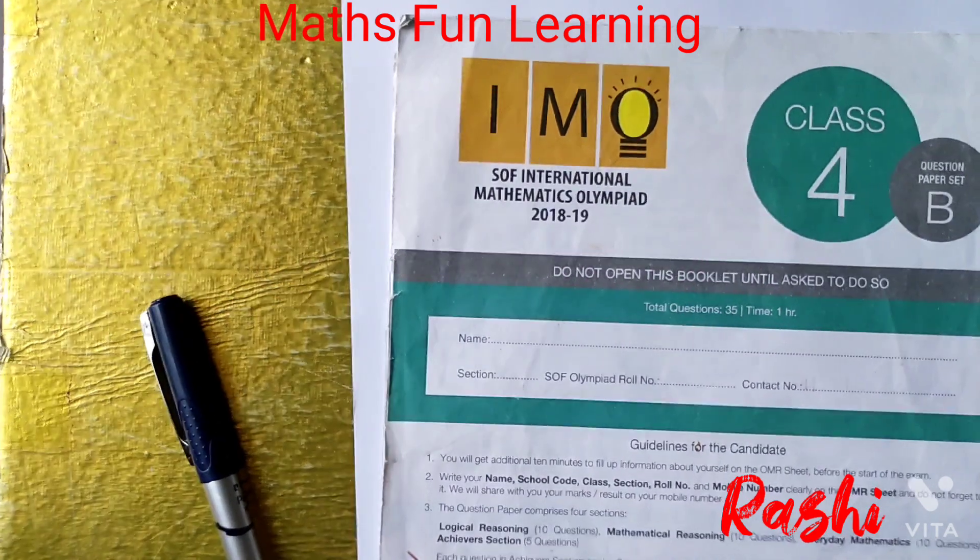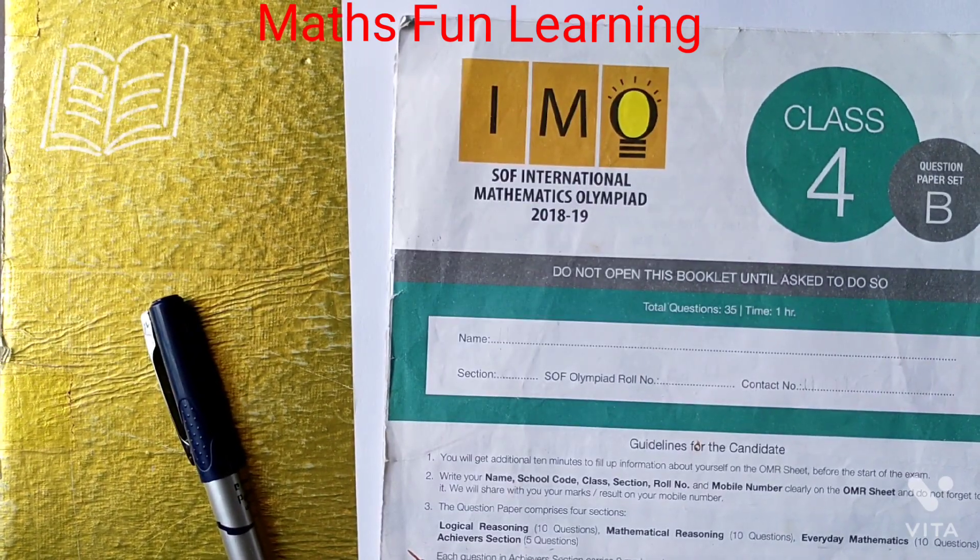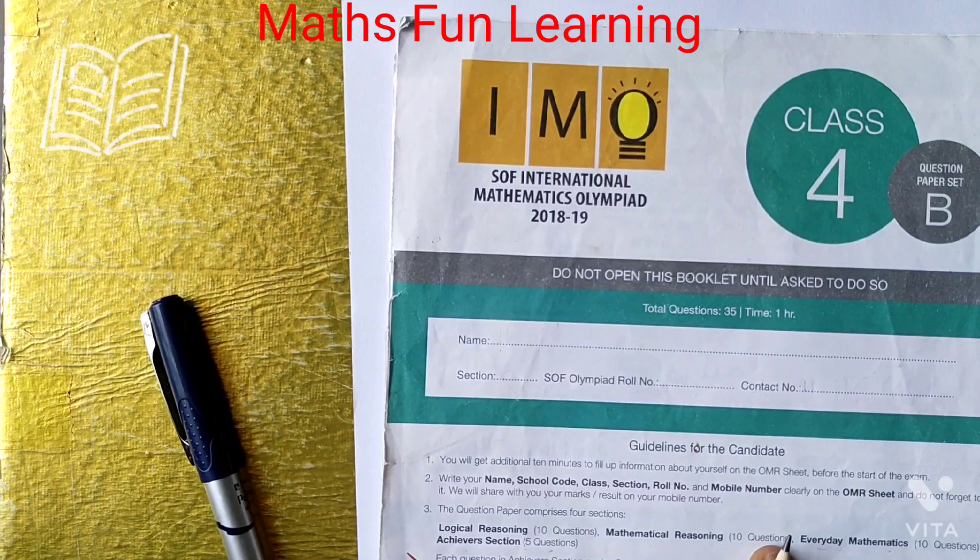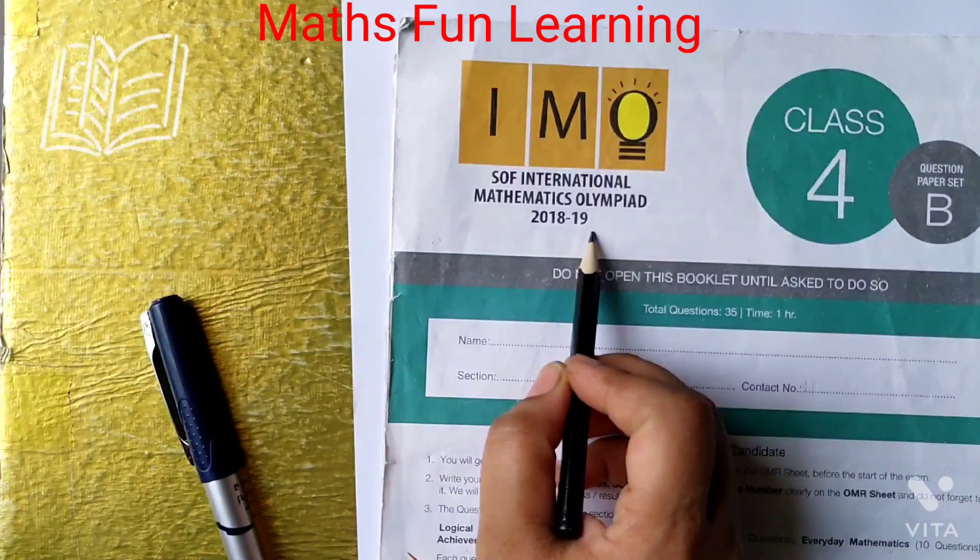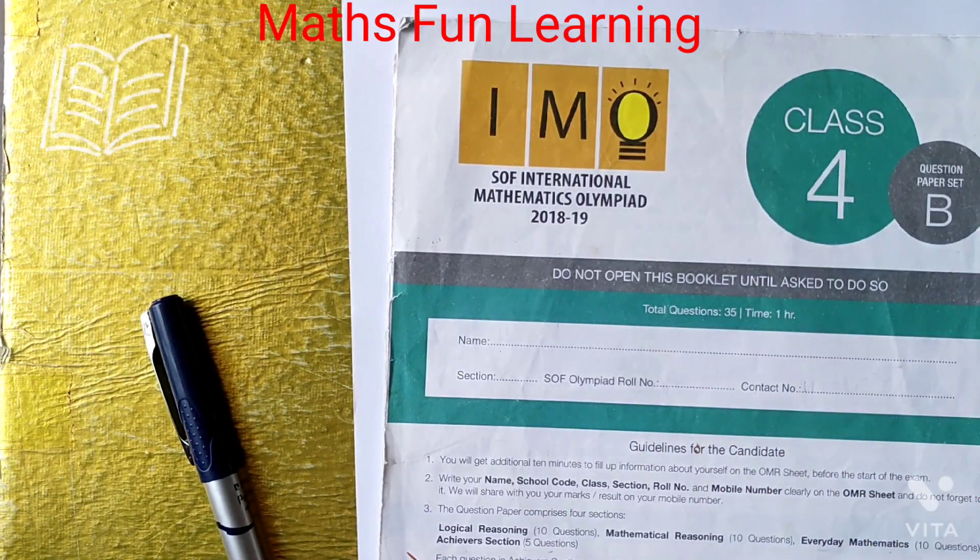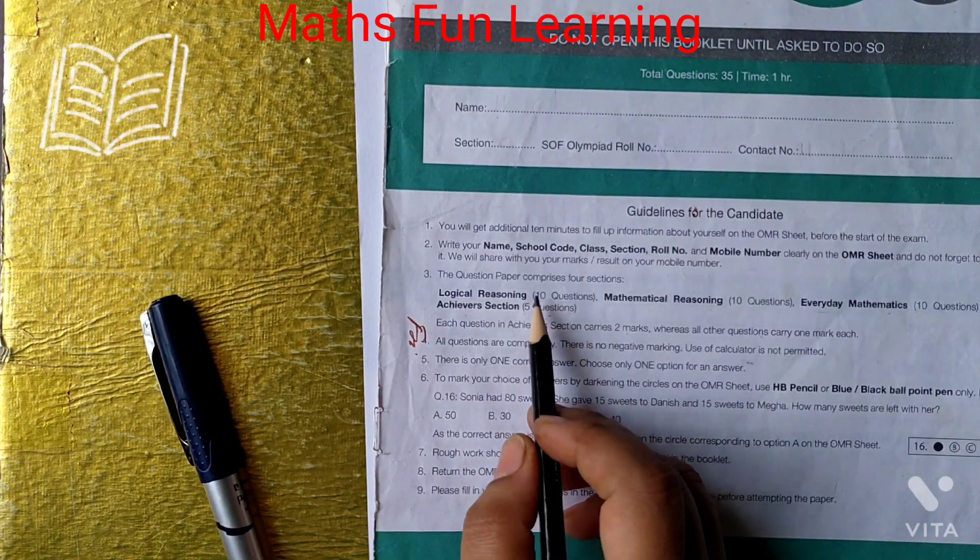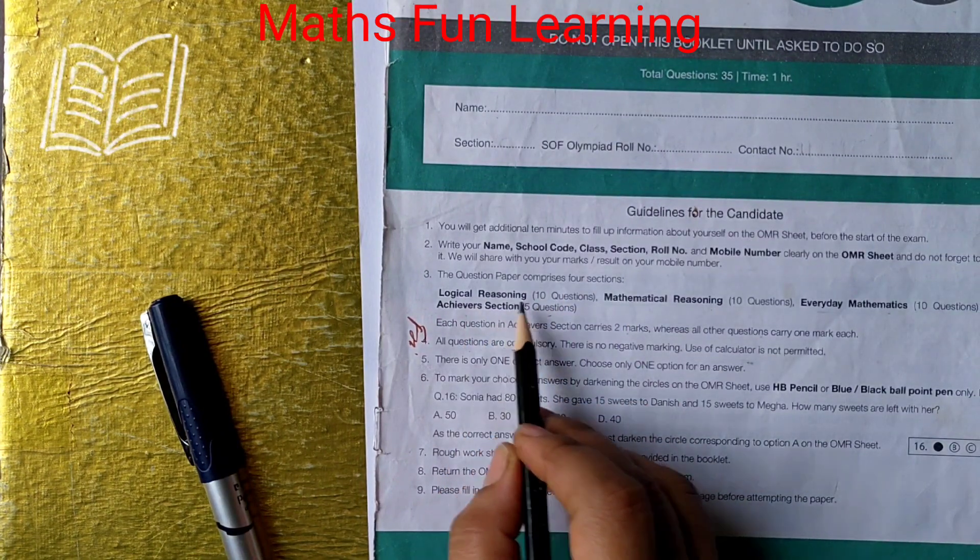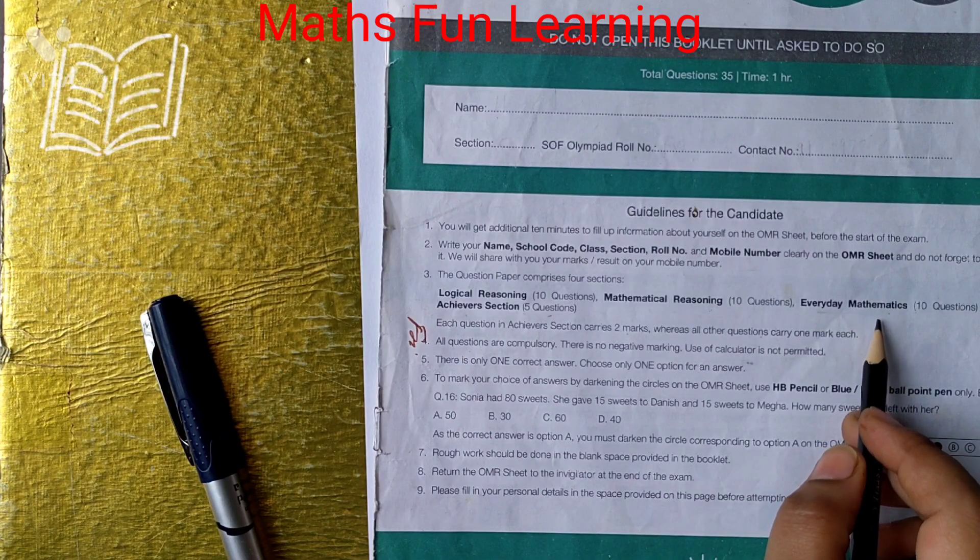In this video we are going to solve an Olympiad paper, the International Math Olympiad. This set which I am having right now, it is 2018-19 set, class 4 and set B. I already explained to you logical reasoning, mathematical reasoning and everyday mathematics in my previous video.